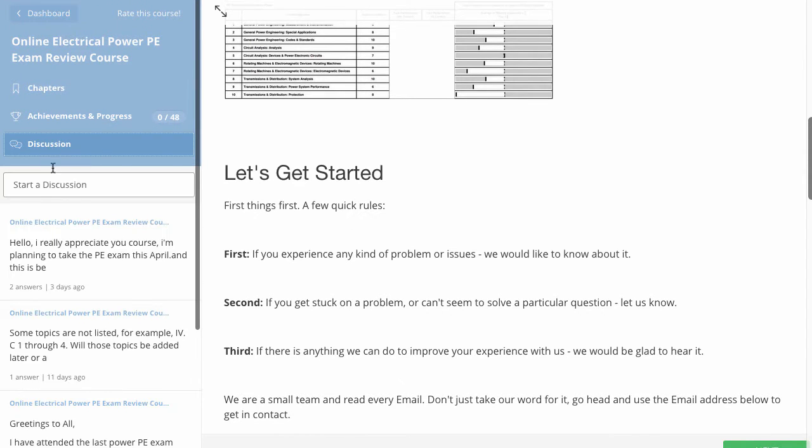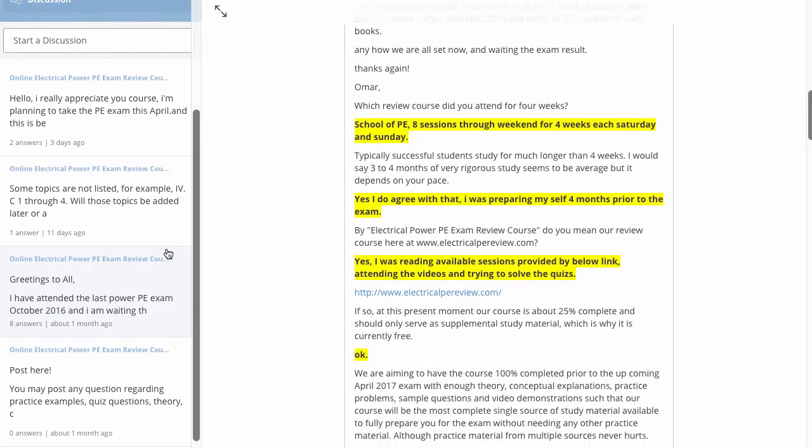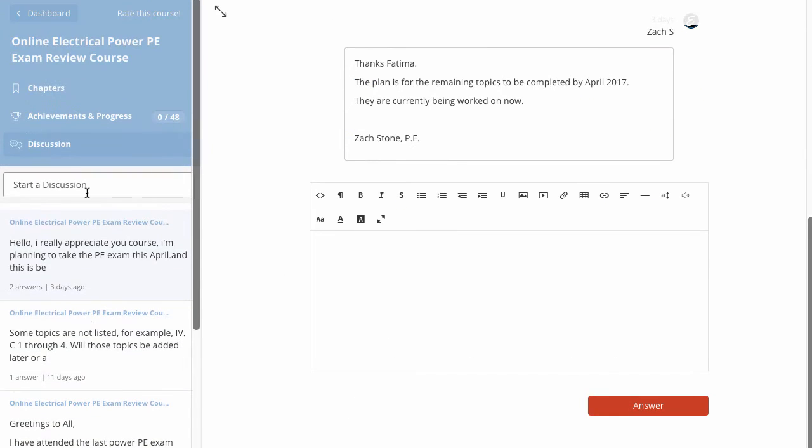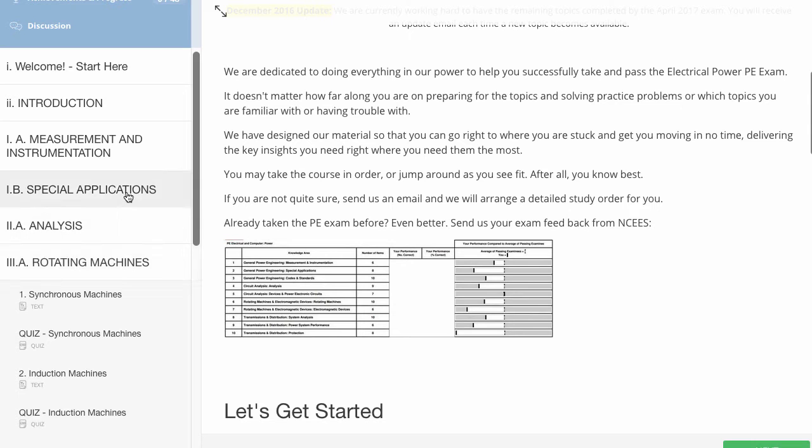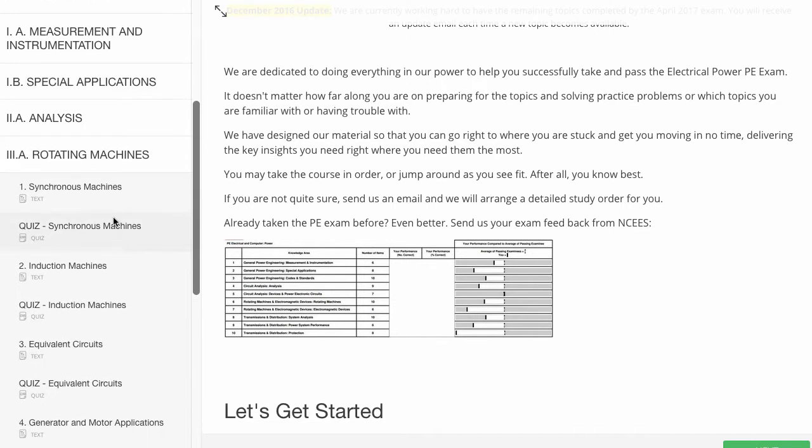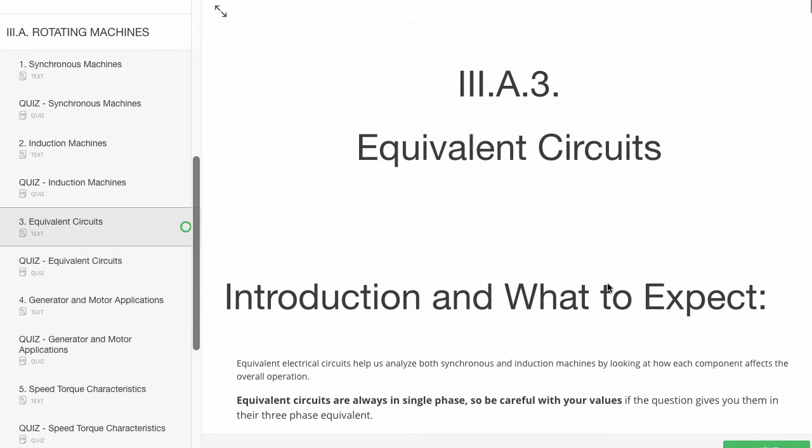On the left you can also access many different student discussion pages where people can ask about questions, anything on the exam, strategy, stuff like that. Or you can click back on chapters and go to each individual chapter and take a quiz. So for example we'll show a quick section on rotating machines. We'll take a look at the equivalent circuit chapter and every chapter features the same format.